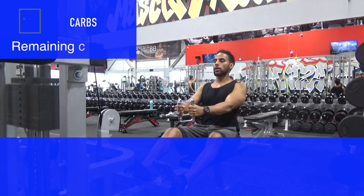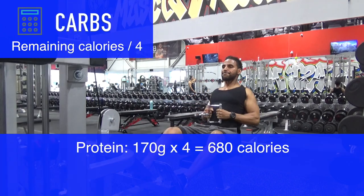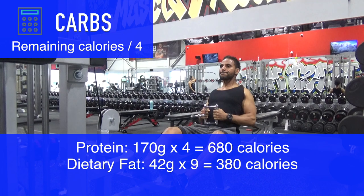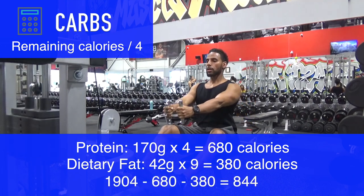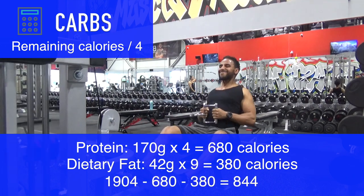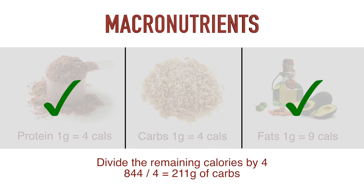Once we've established our protein intake and our dietary fat intake, the remaining calories will be used for carbohydrates. We subtract the calories used for protein and dietary fat from our total calories, and the remainder goes to carbohydrates. By dividing the remaining calories by 4, this gives you the grams of carbohydrates you need to consume. At this point, you now have a number for your protein, fats, and carbs.